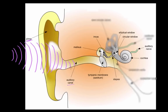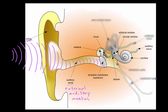The auditory canal is also known as the external auditory meatus. The sound waves travel down the external auditory meatus and the next thing they hit is the eardrum, also known as the tympanic membrane. As this pressurized sound wave hits the eardrum, the eardrum starts vibrating back and forth.